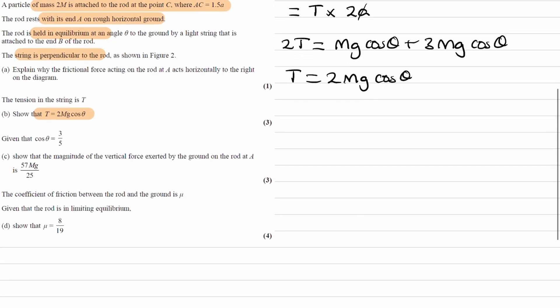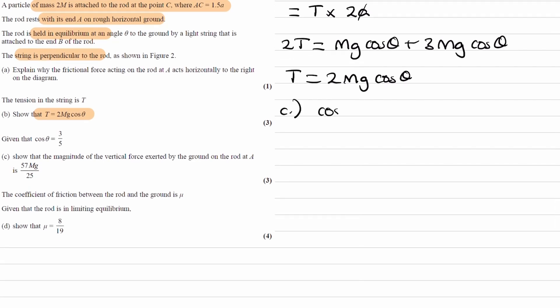On to part C. Given that cos theta is equal to 3 over 5, let's start off by drawing a little triangle. This would be the adjacent 3, the hypotenuse 5. SOHCAHTOA cos theta is equal to adjacent over hypotenuse. That would mean, using Pythagoras, that this length here is 4. And then we can say that sin theta, which is equal to opposite over hypotenuse, would be 4 over 5.